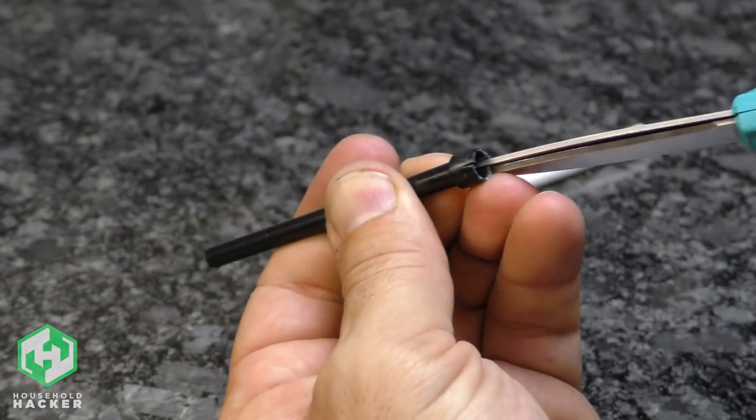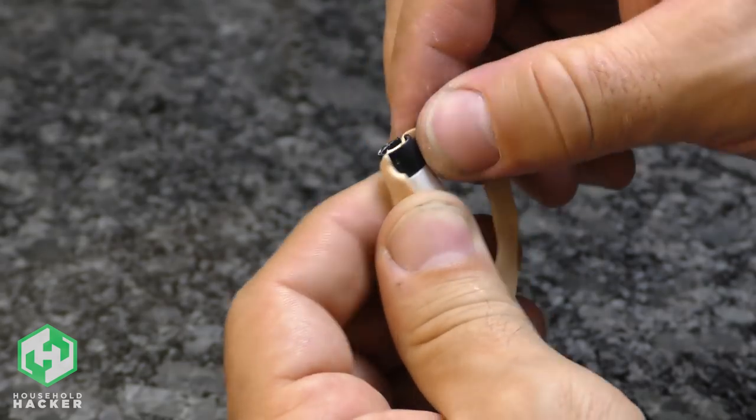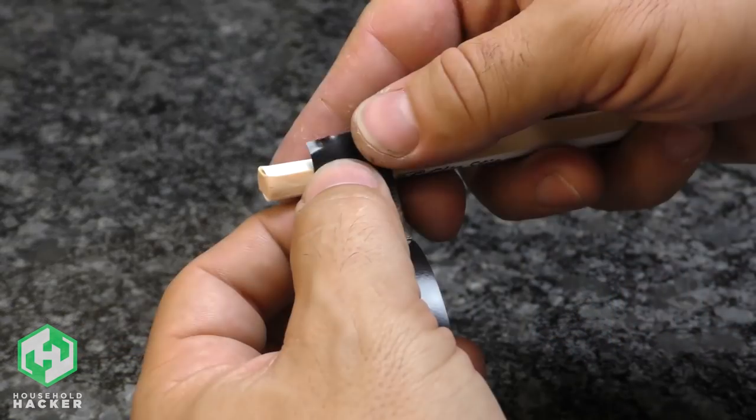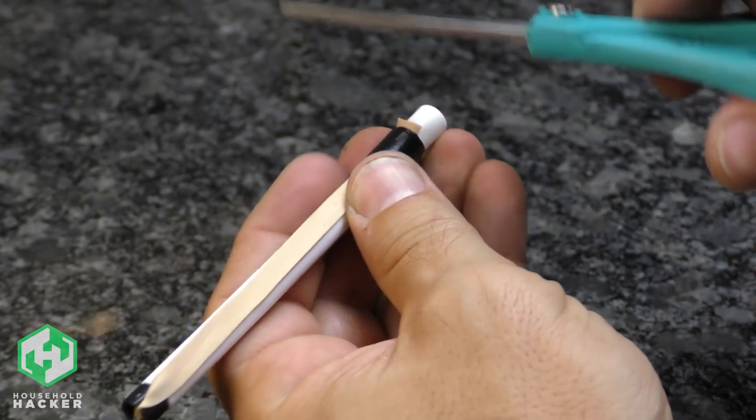Take the end of the eraser holder and cut two slits across from one another. Now place a rubber band between the two slits as flat as possible. Stretch the rubber band to the other end of the barrel and secure it with tape about an inch from the end. Cut off the excess rubber band and discard.